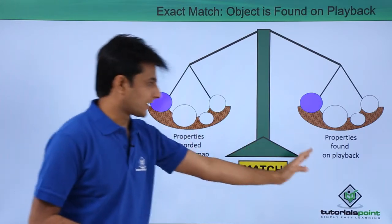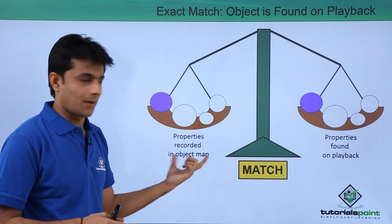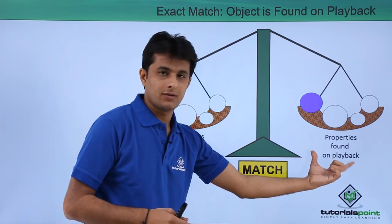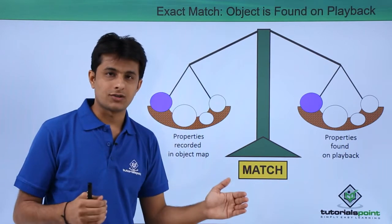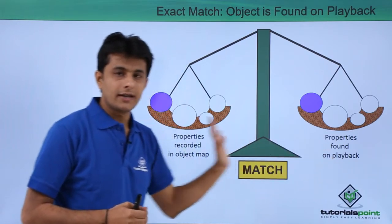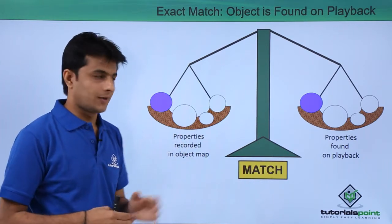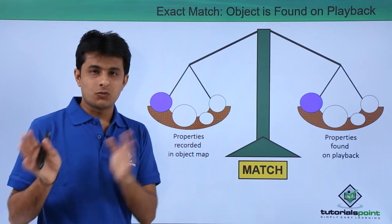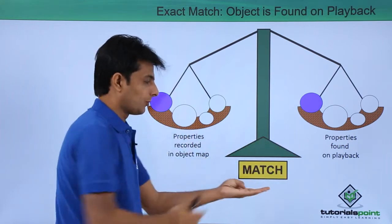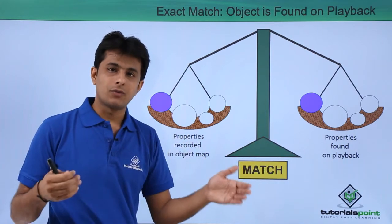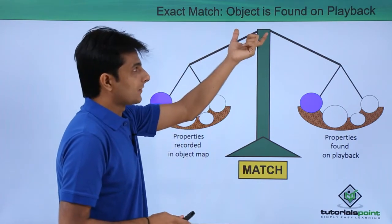There are two types given here: properties recorded in the object map - that is a test object map - and properties found during the playback. These are properties of the same object on different situations. Carefully observe the size of the properties in both places are same. The color of the properties in both places are same. When expected is equal to actual, you'll be getting the answer as match. This is what we are doing from last few videos - we are recording and we are executing without making any changes. So the object is found on the playback - the properties are matching.